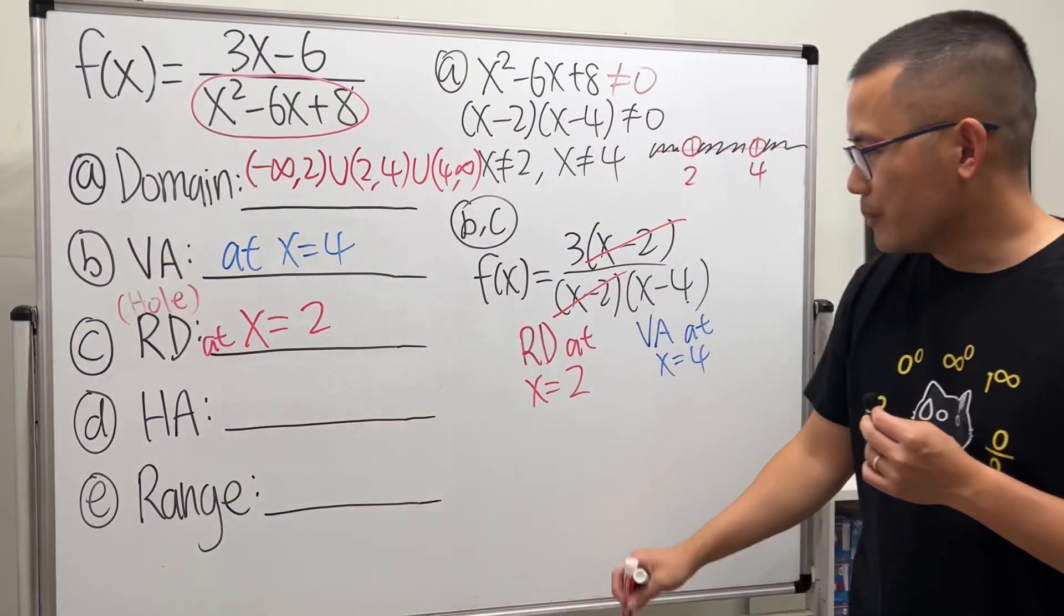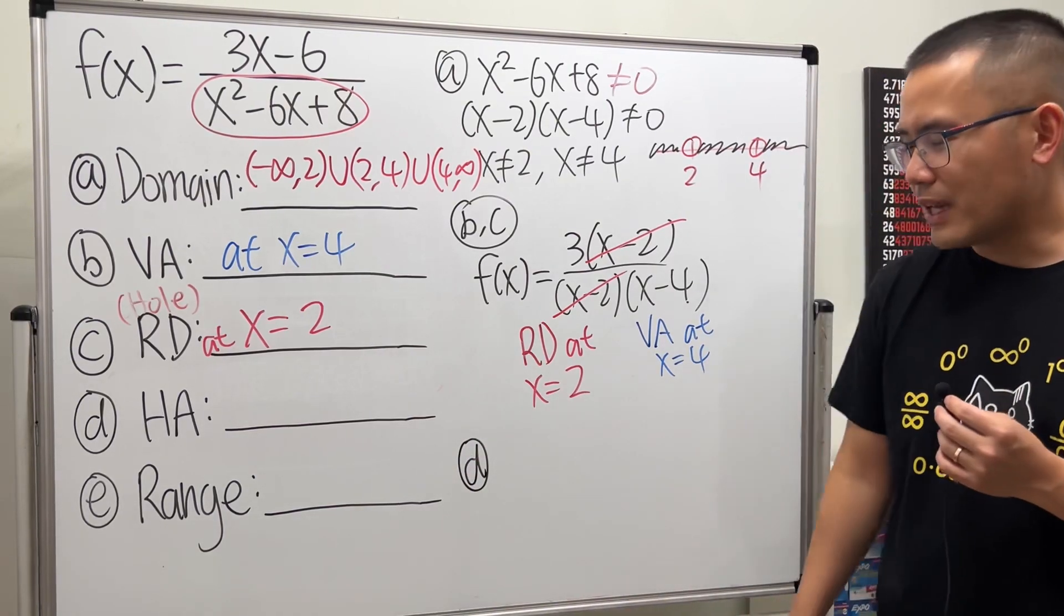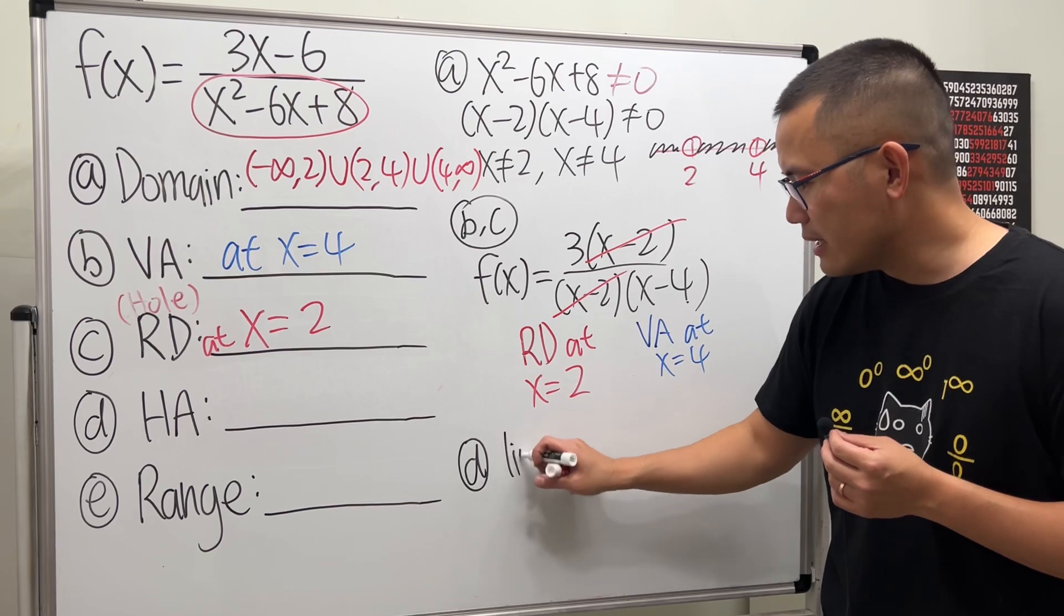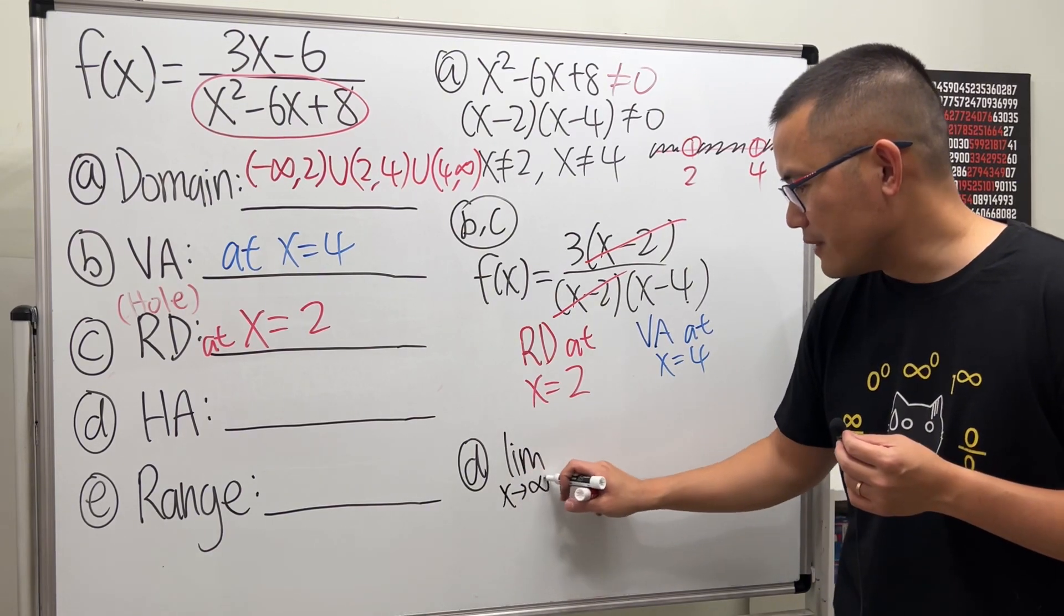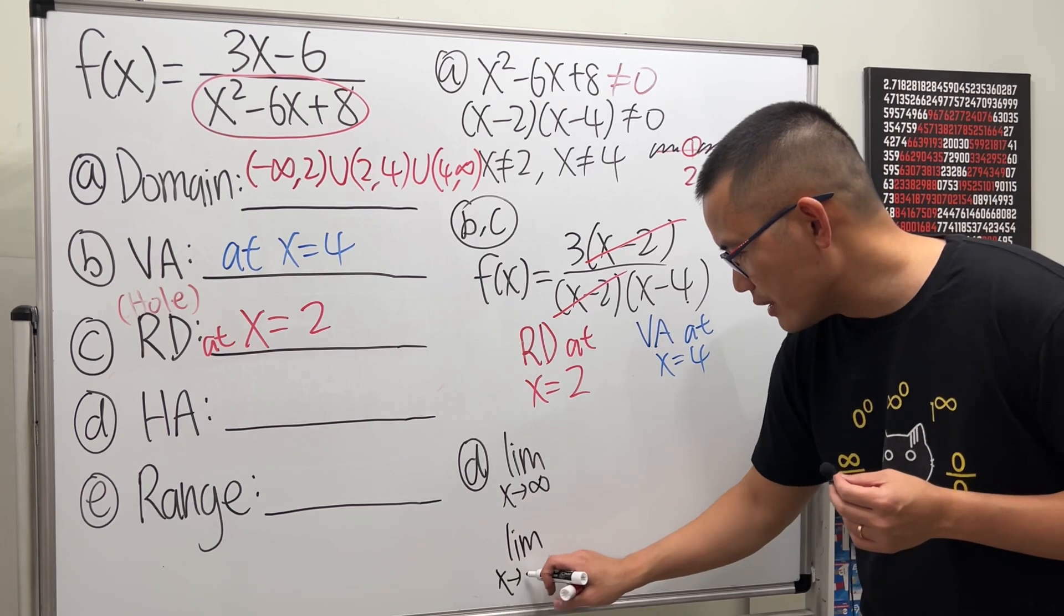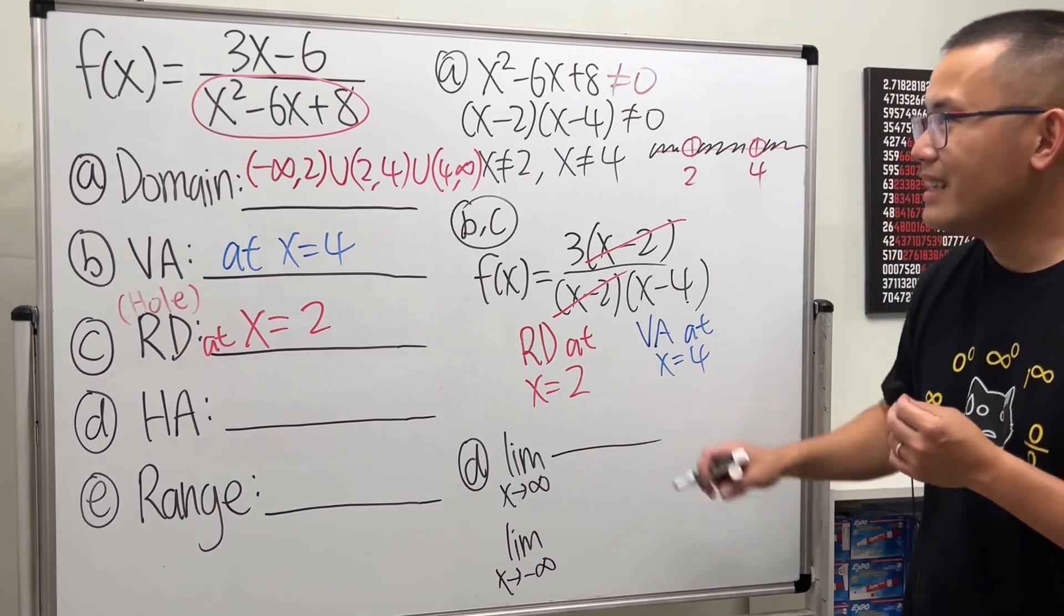Now, horizontal asymptote. This is like some kind of calculus. For horizontal asymptote, you always take the limit as x approaching infinity, and you also do the limit as x approaching negative infinity. Sometimes it matters, so we do both.